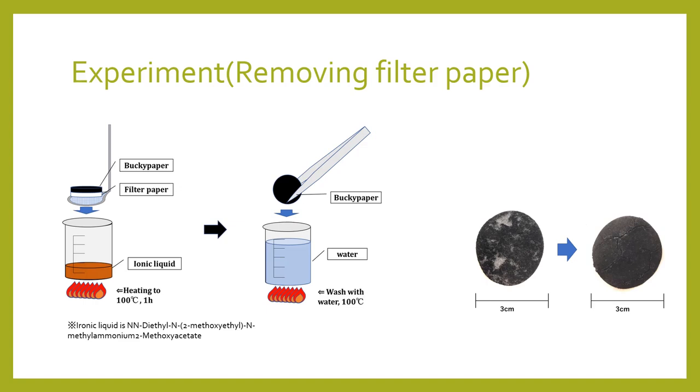So remove cellulose using ionic liquid. After that, wash with 100 degrees water to remove the ionic liquid adhering to buckypaper.